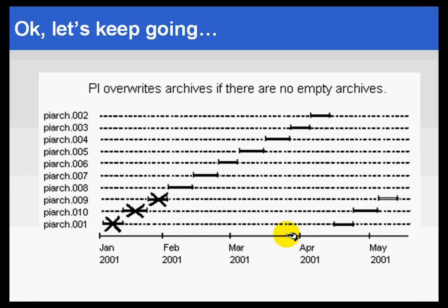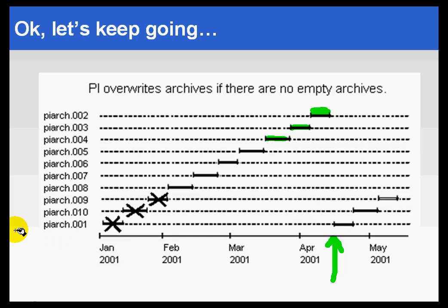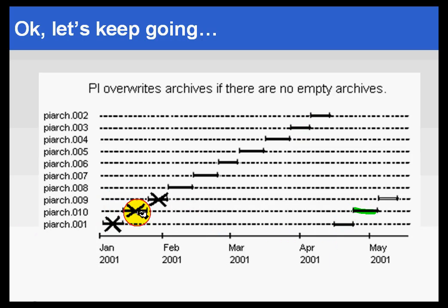Extending our timeline through the shifting into these archives — at about mid-April — we are now faced with a situation in which the current archive is completely full. We cannot store any more data into that. And all the other archives have already been shifted into; they all contain data. At this point, if there are no more shiftable empty archives, we go to the oldest archive in the system that is shiftable — in this case, back to PIARCH001. It's going to overwrite that immediately, zero it out, and start writing to it again. It means that the data in that archive is no longer going to be available — it's basically been thrown away, overwritten.